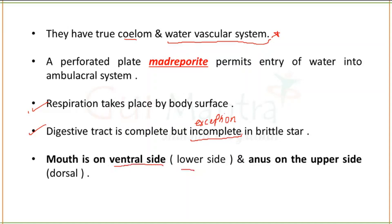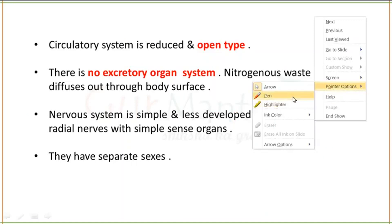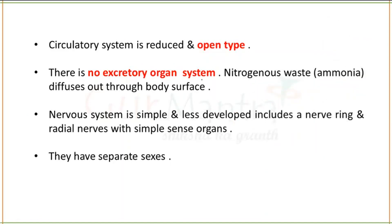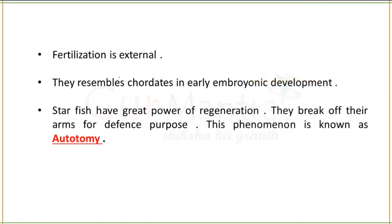The mouth is on the lower side and the anus is present on the upper, dorsal side. The circulatory system is generally reduced and open type. There is no excretory organ present. Separate sexes are present, fertilization is external. Importantly, this organism is called deuterostome in early embryonic development.